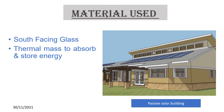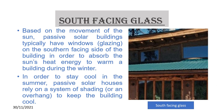Materials used in passive solar buildings include south-facing glass and thermal mass to absorb and store energy. Based on the movement of the sun, passive solar buildings typically have windows on the south-facing side of the building in order to absorb the sun's heat energy to warm up during winter. And in order to stay cool in summer, passive solar houses rely on a system of shading to keep the building cool.